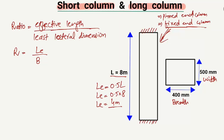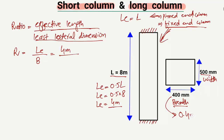In our case, the effective length is 4 meters because it is a fixed-end column. Now we divide this by the least lateral dimension, which is the minimum of 400 mm and 500 mm — that is 400 mm or 0.4 meters. So the ratio r equals 4 divided by 0.4, which gives us 10.